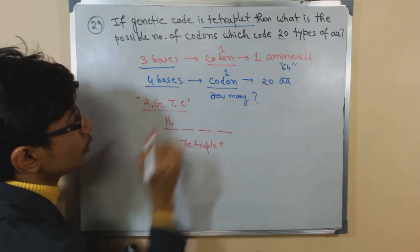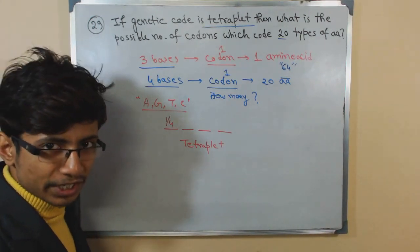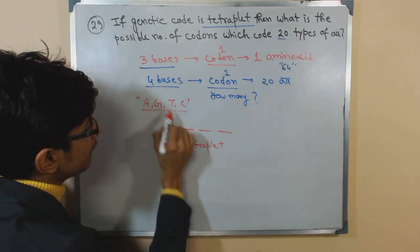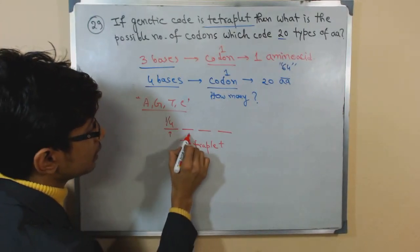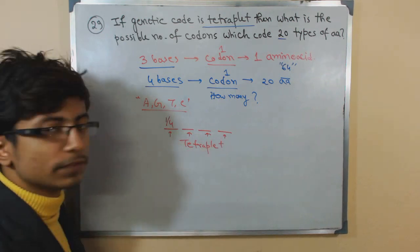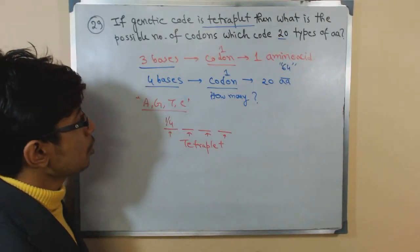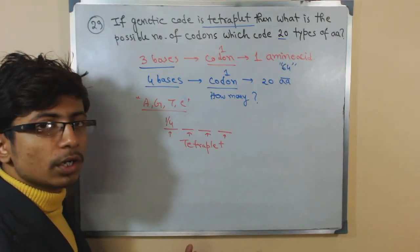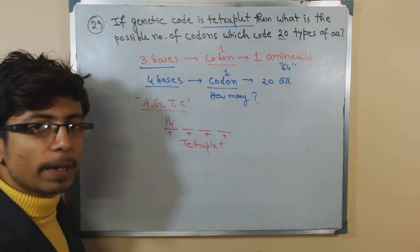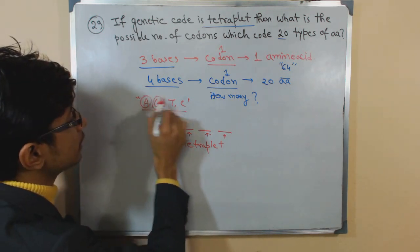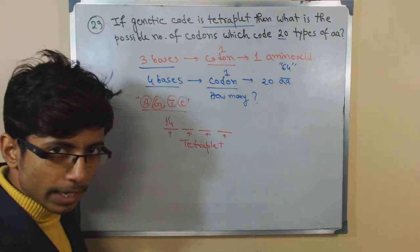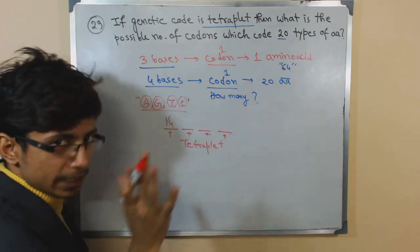We are having these four bases there, four alphabets in a genetic dictionary. So in any position of this tetraplate codon—first, second, or third—we are having the probability of placing any of these bases there. So this is the idea.